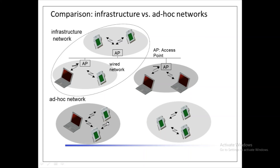No access point controlling medium access is necessary in an ad-hoc network. Each node can communicate easily within the ad-hoc network if they can reach each other physically — that is, if they are within each other's radio range, or if another node can forward the messages.